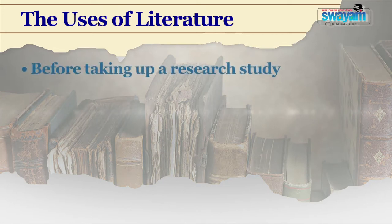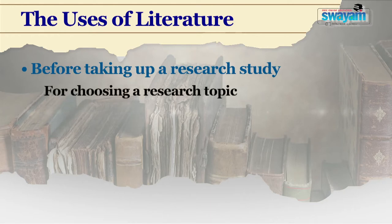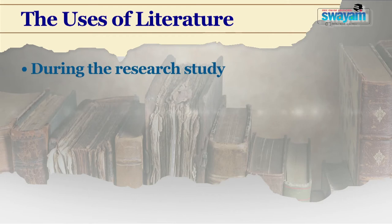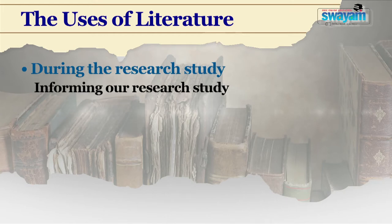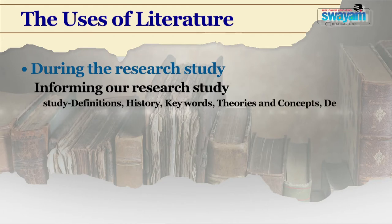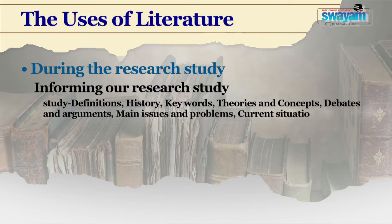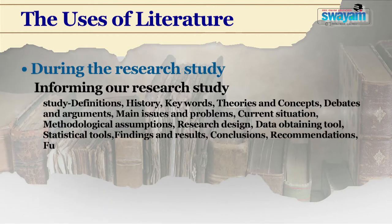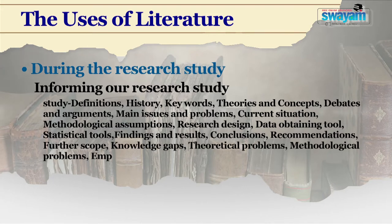Let us understand the different uses of literature. Before taking up a research study, we use literature for choosing a research topic. To find a topic for research, we need to go through the literature of our domain to explore what areas have already been researched, what areas are not covered at all, and what are the gaps in the existing research. During the research study, the literature review serves several other purposes, such as informing our research study. Through literature review, we find definitions, history, keywords, theories and concepts, debates and arguments, main issues and problems, current situation, methodological assumptions, research design, data obtaining tools, statistical tools, findings and results, conclusions, recommendations, further scope, knowledge gaps, theoretical problems, methodological problems and empirical gaps — all of which enlighten our research study.